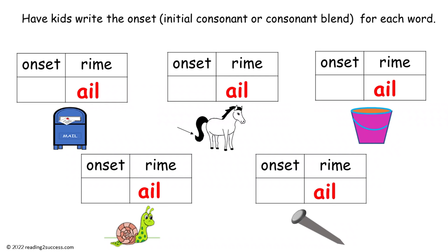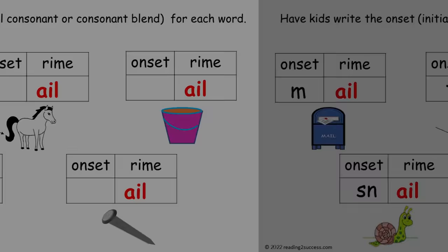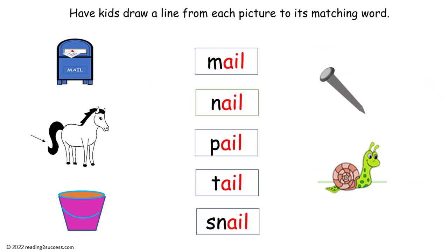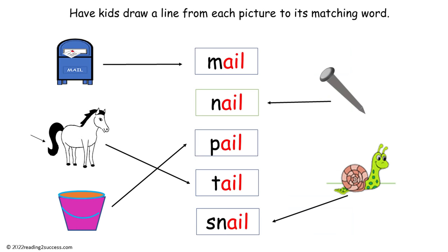Now have kids write the onset — the initial consonant or consonant blend — for each word. Then have kids draw a line from each picture to its matching word. This is a completed example.